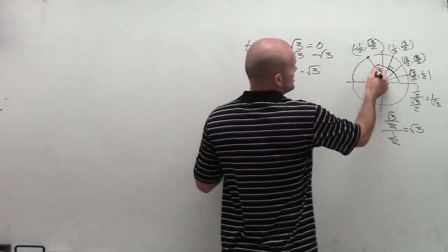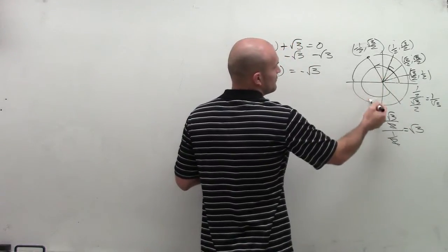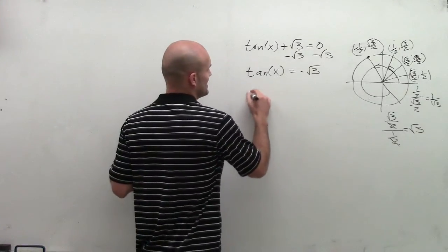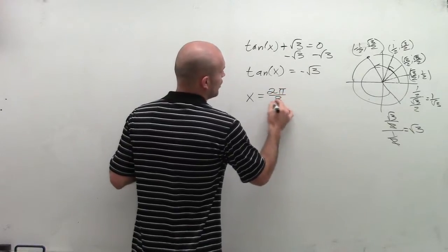Now, you could also say, well, there's another angle all the way down here, right? 2π over 3, 3π, 4π, 5π over 3. But before we get into that, let's just write down our one answer. So we can say that my value x is equal to 2π over 3.